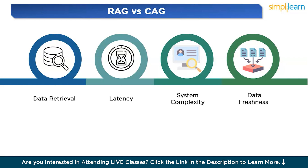Third, system complexity: RAG is more complex, requiring an external retrieval system — such as a database or index — that needs continuous updates to the knowledge base. CAG is simpler, avoiding external retrieval systems and relying on a pre-computed key-value cache, making it easier to maintain. Fourth, data freshness: RAG can handle dynamic, frequently updated data since it fetches the latest information in real time. CAG is best suited for static or stable knowledge bases — since the data is preloaded, it may not reflect the most recent changes unless the cache is updated periodically.